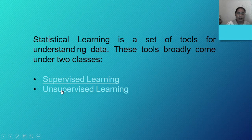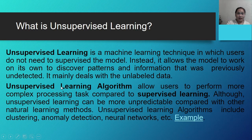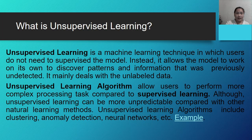Now we proceed to unsupervised learning. Unsupervised learning is a machine learning technique in which users do not need to supervise the model. Instead, it allows the model to work on its own to discover patterns and information that was previously undetected. It works with unlabeled data. Unsupervised learning algorithms allow users to perform more complex processing tasks compared to supervised learning, although unsupervised learning can be more unpredictable compared with other natural learning methods.